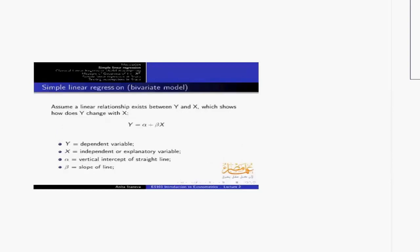To understand regression analysis, let us begin with just two variables. Assume we have a linear relationship between Y and X, which shows how Y changes with the change in X. We can write this mathematically as Y equals alpha plus beta X. Y is our dependent variable, X is the independent or explanatory variable, alpha is the intercept of the regression model, and beta is the slope of the line.